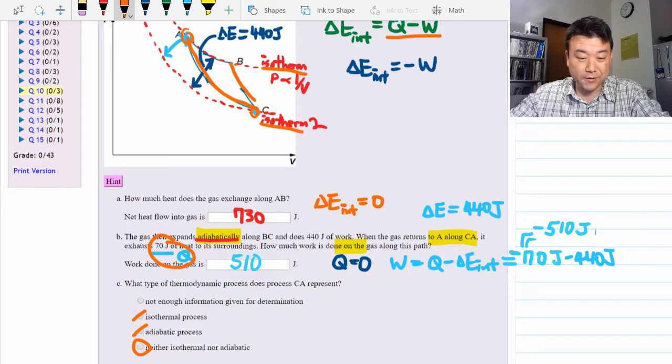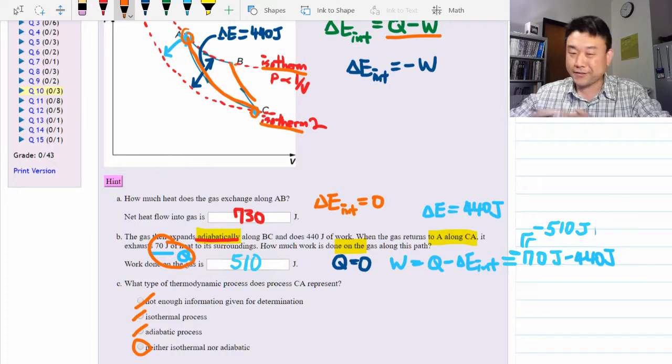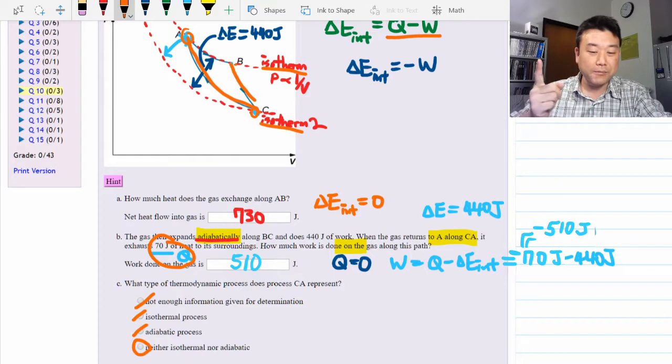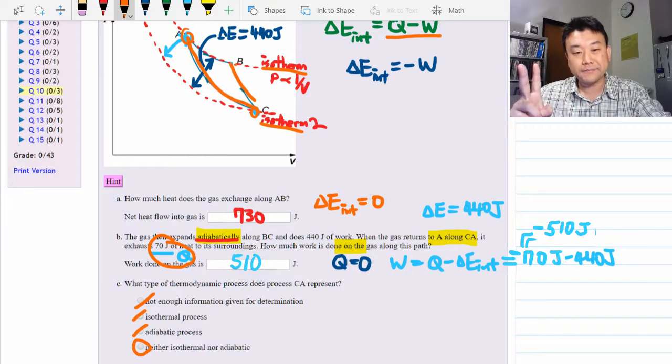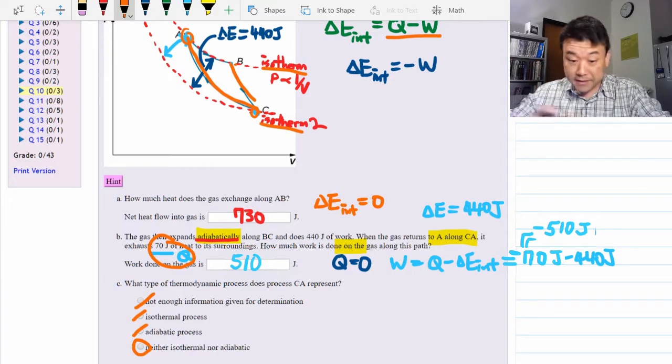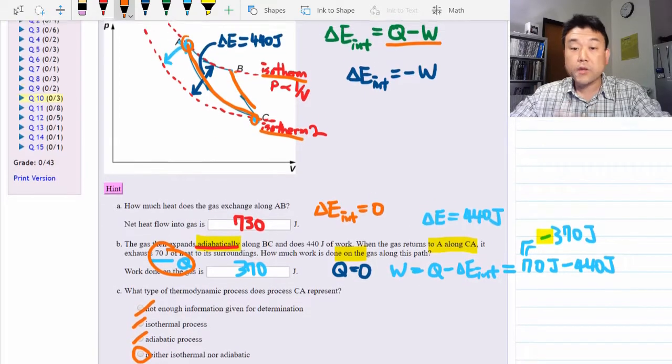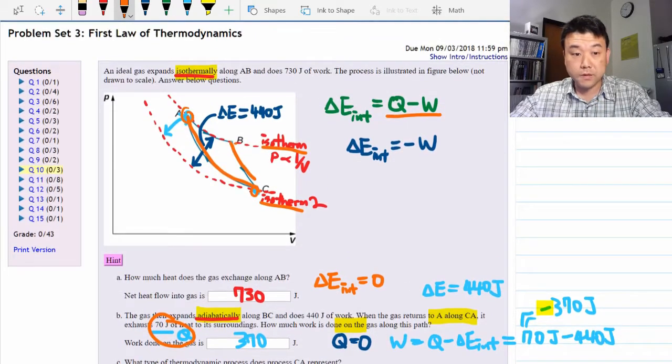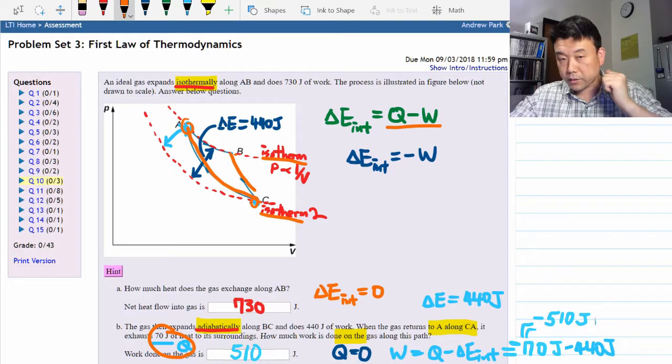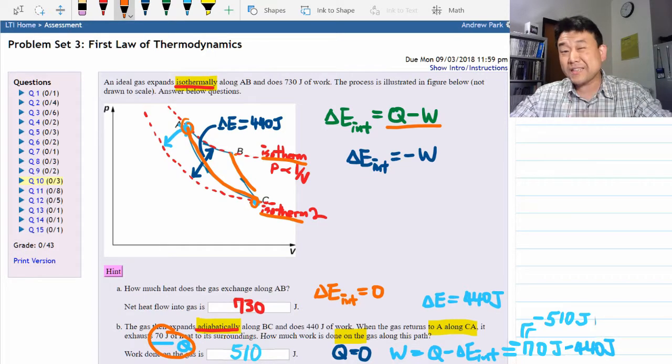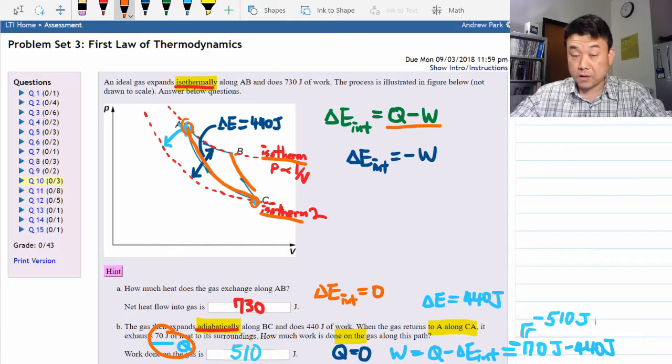Since we figured that out, it means there is enough information for determination that it is neither isothermal nor adiabatic. So that's it. That's this question. Once again, as long as you had a good conceptual understanding of what thermodynamics problem involves, you can do this very quickly without a lot of tedious calculations. I'll see you for the second video. Until then, bye.